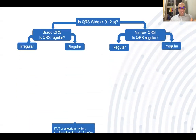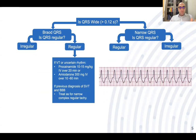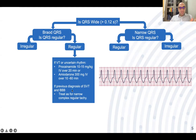For regular wide complex tachycardia, consider ventricular tachycardia, or alternatively SVT (supraventricular tachycardia) with bundle branch block. Differentiating between the two requires a 12-lead ECG and specific criteria. However, if you are in doubt, treat as ventricular tachycardia. Give procainamide 10 to 15 mg/kg over 20 minutes, or amiodarone 300 mg over 10 to 60 minutes.